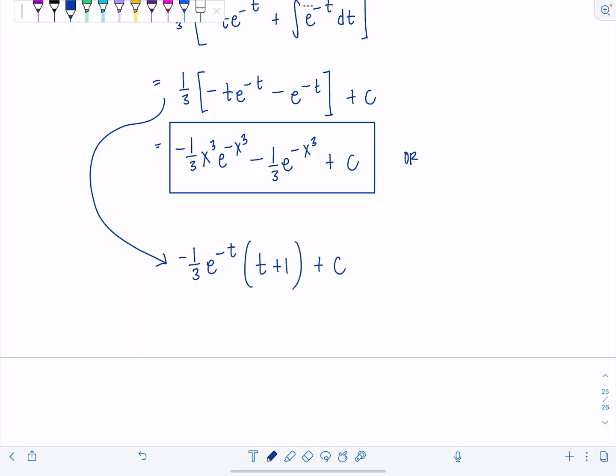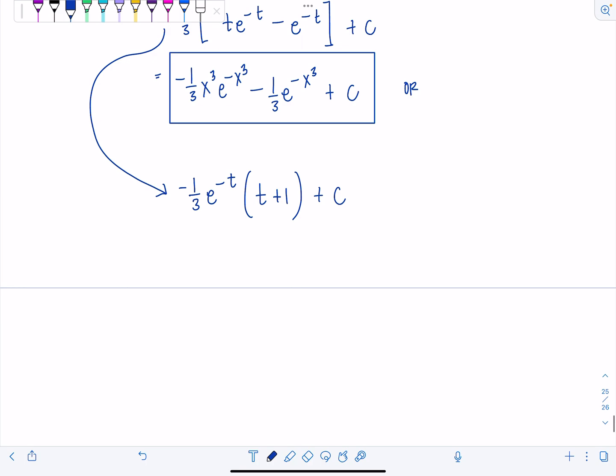And then we can back substitute and say, all right, t was x cubed. So e to the negative x cubed times x cubed plus 1 plus c. So here's an alternative way of writing your final answer.